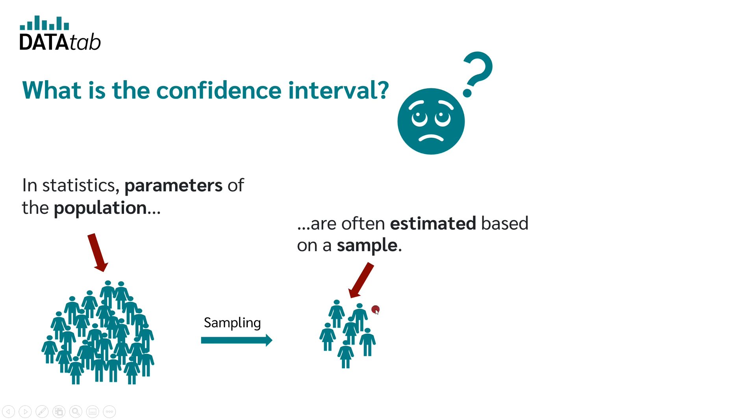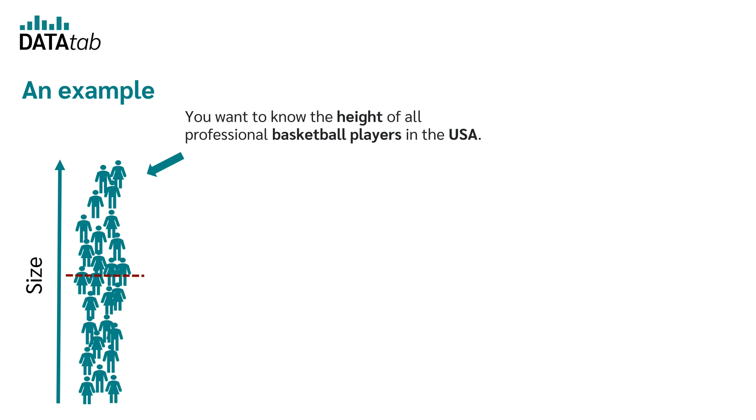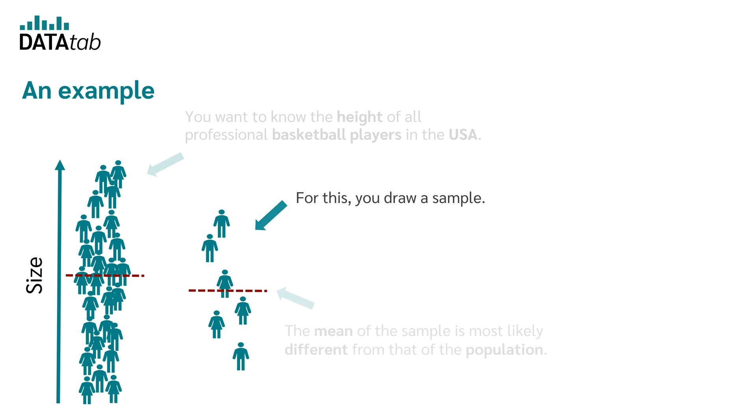Now you want to use this sample to estimate a parameter of the population. Parameters that can be estimated are, for example, the mean or the variance. Let's look at an example. You want to know the height of all professional basketball players in the US. In order to figure this out you draw a sample. The mean of the sample is most likely different from the one of the population.